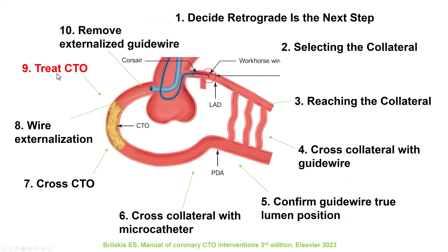The next step — step number nine — is to treat the chronic total occlusion. This is done with lesion preparation using balloons and other devices and placing stents, typically performed over the externalized guidewire.